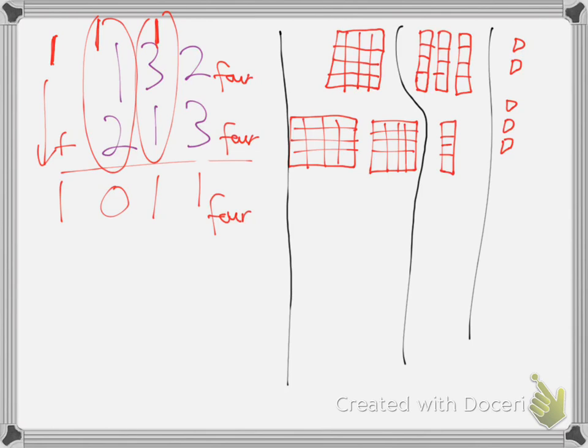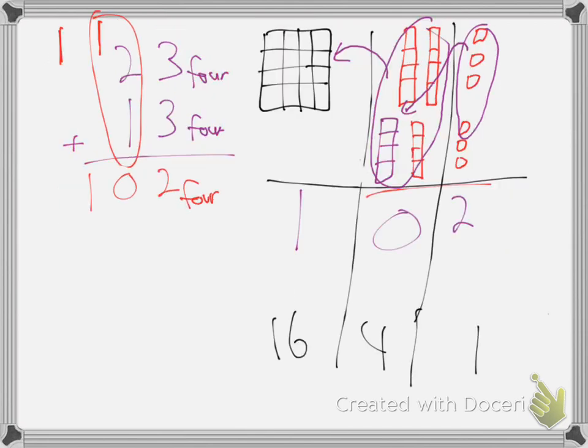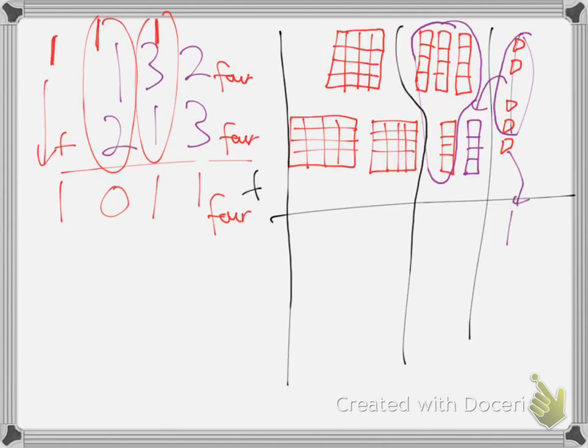So when we're adding these up, what just happened? We just gathered together 1, 2, 3, 4 of those. Traded them in for a new rod in the next column. So they're gone. They left and went to the next column. That's called carrying. What's left over is the 1. And then here, 1, 2, 3, 4. Any 4. Those 4 turn into a new flat. See how those 4 rods, any 4, turn into a new flat?